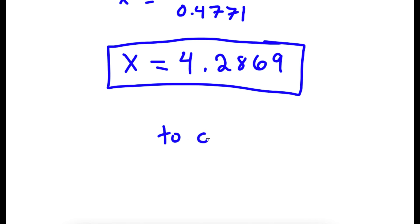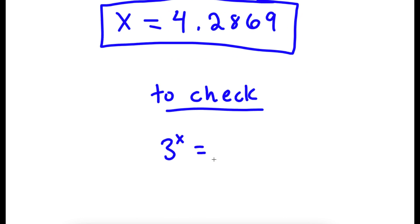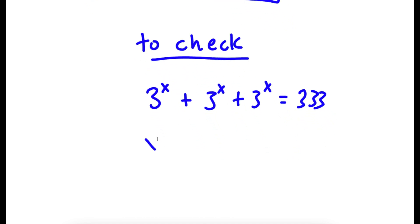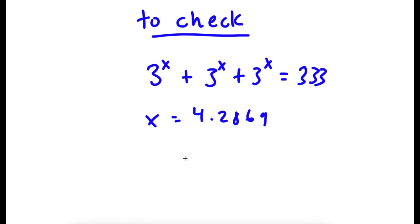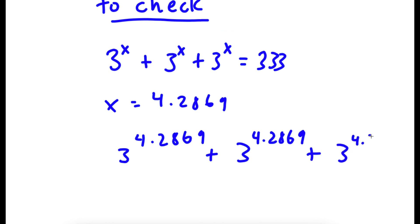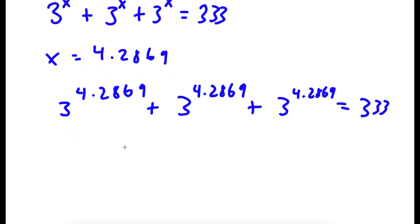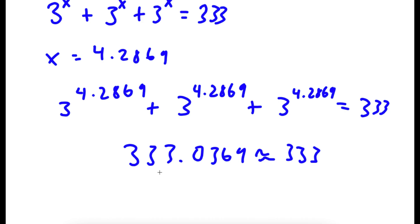Now to check, I have 3 to the power of x plus 3 to the power of x plus 3 to the power of x is equal to 333, with x equal to 4.2869. So I have 3 to the power of 4.2869 plus 3 to the power of 4.2869 plus 3 to the power of 4.2869 is equal to 333. If you add up all these you get 333.0369, which is approximately equal to 333. So this is correct.